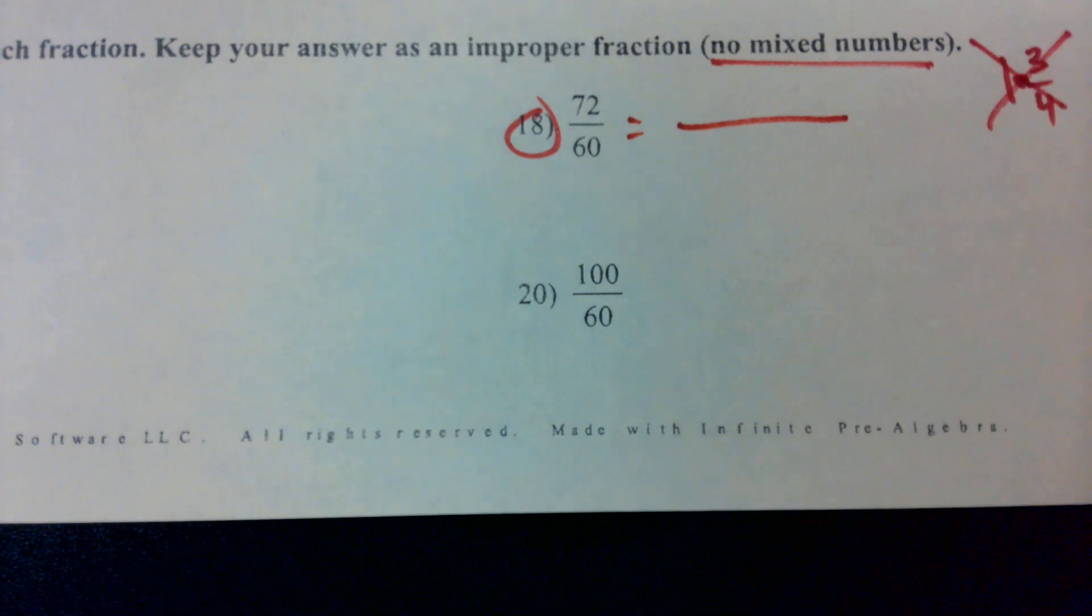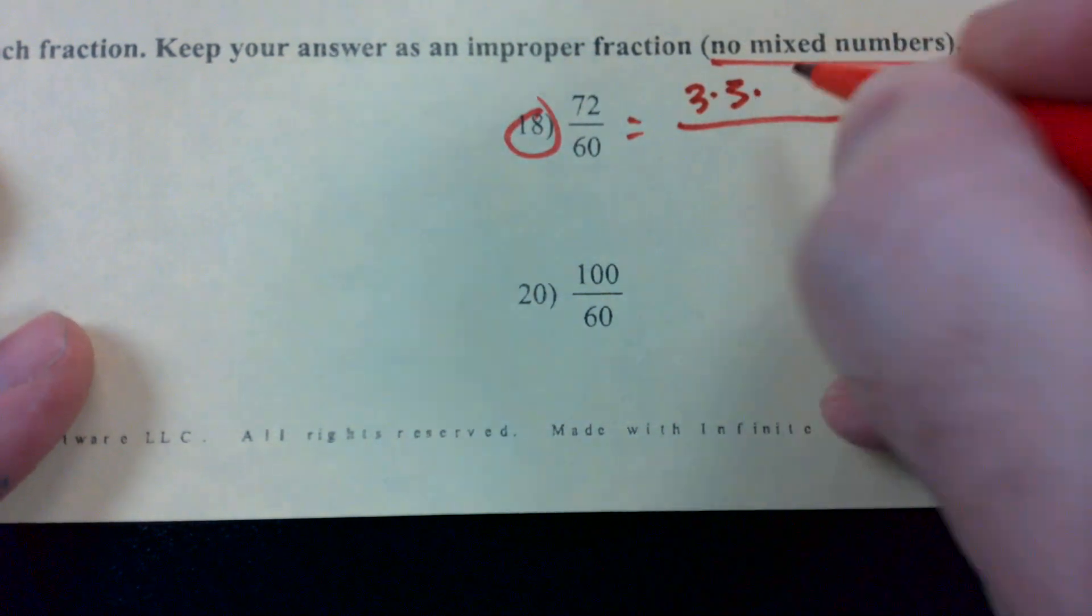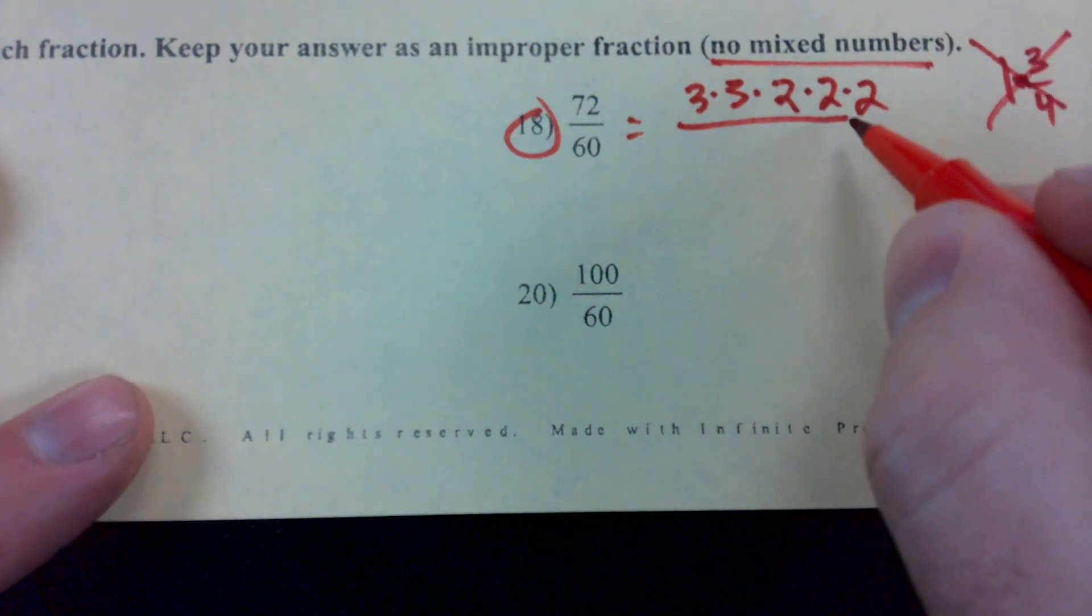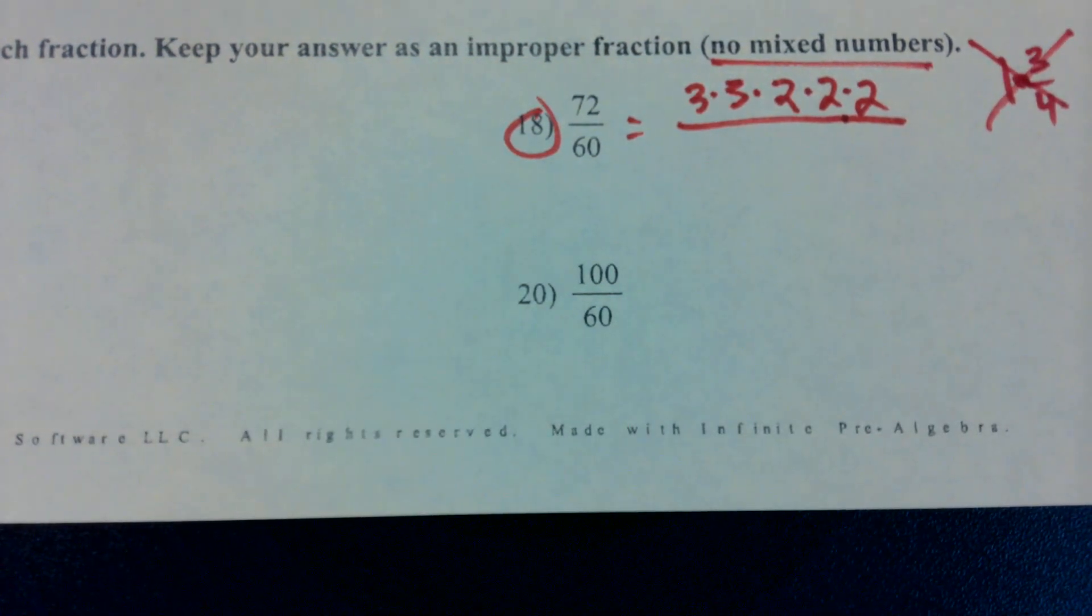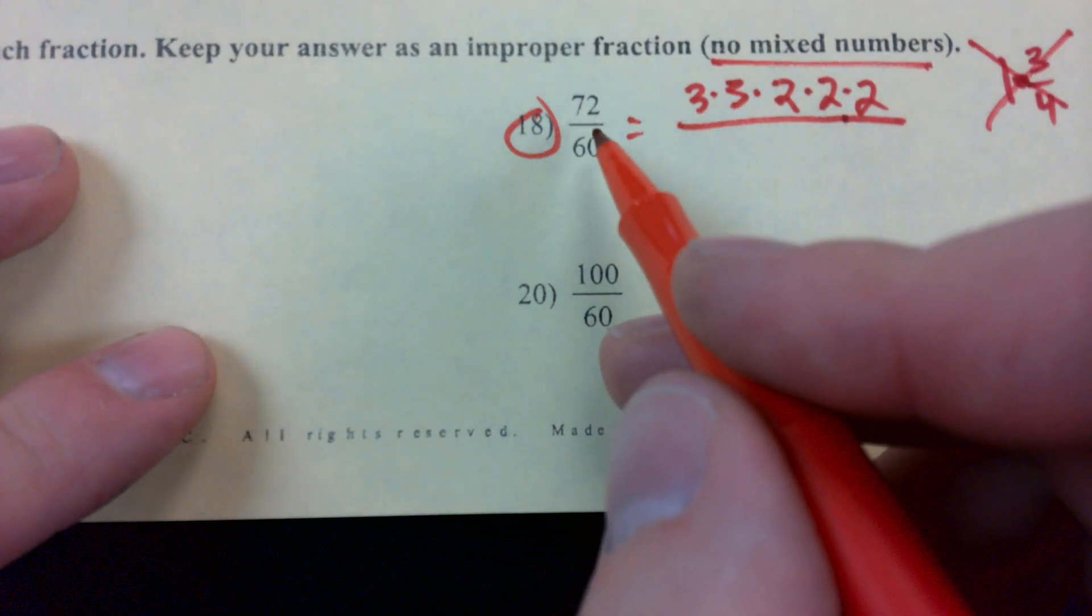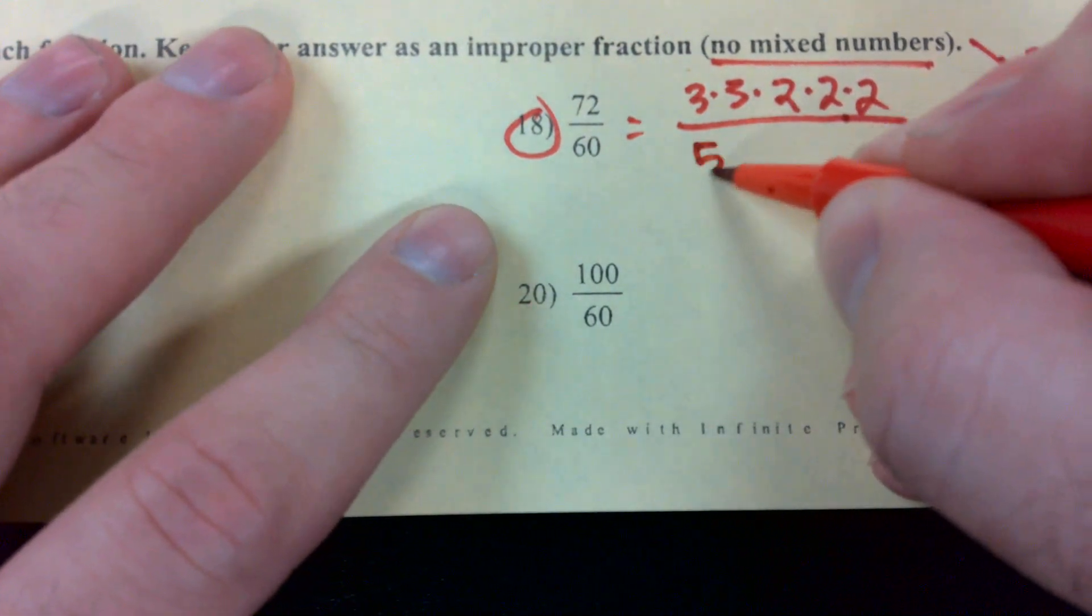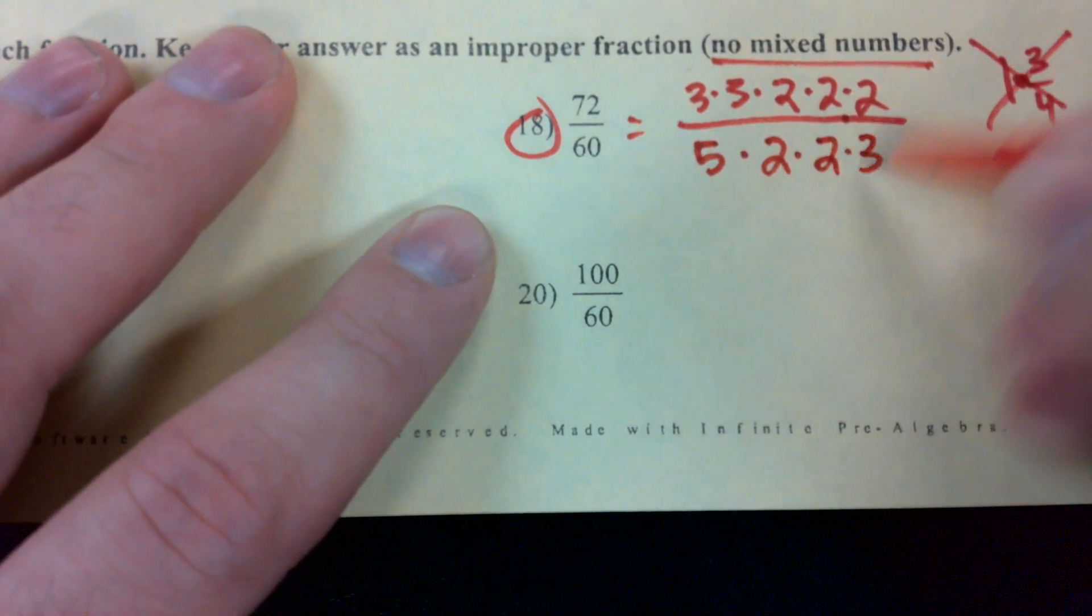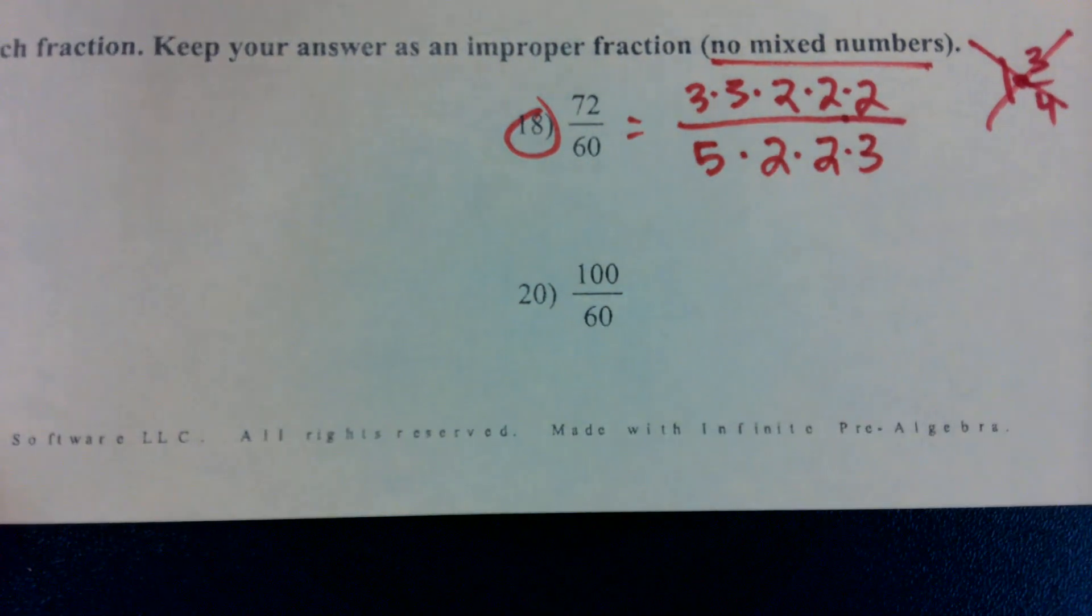Seventy-two is what times what? Nine. Nine times eight, right? Yeah. Nine is three times three. Eight is what? Two times four, and four is two times two. So it went a little quick there, but hopefully you see how we broke it down into its prime factors. Three times three times two times two times two gives us 72. What about 60? Five times 12. Perfect. Five times 12. Twelve is two times six. Six is two times three. The more comfortable you get, the quicker you can go. But if you need to break it down step by step, that works too.